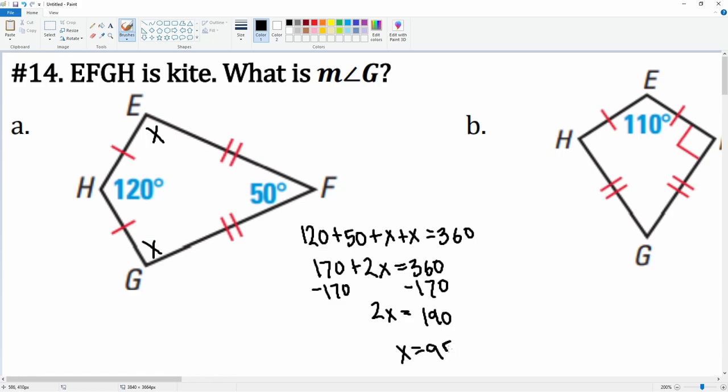So we can say that the angle measurement of G is equal to 95 degrees. Then let's look at part b.